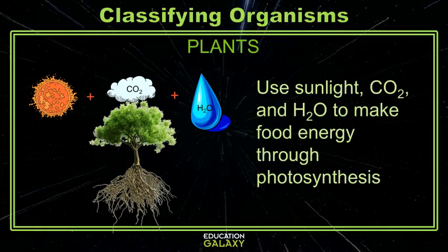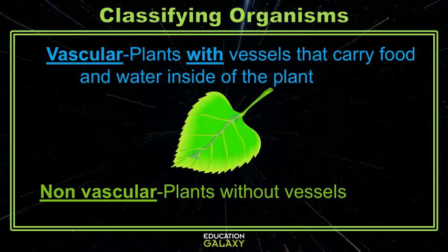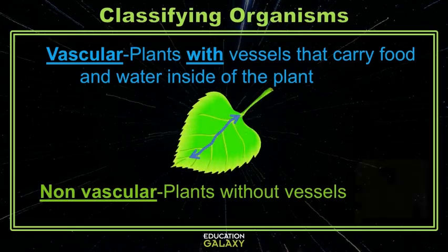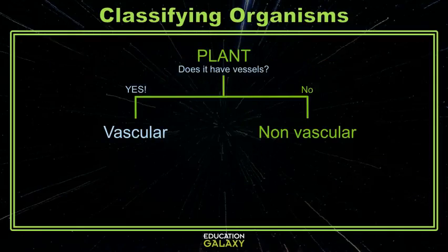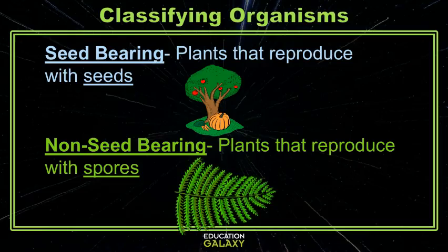We could even do the same thing with plants. Remember that all plants are photosynthetic and use sunlight, CO2, and water to make food. The way plants are divided up into groups is really simple. There are vascular plants, which means the plants have vessels similar to your blood vessels that move food and water in the plant. And there are nonvascular plants that don't. If you take a closer look at vascular plants, we have either seed-bearing plants that reproduce by making seeds, and those that are non-seed-bearing that reproduce with spores.